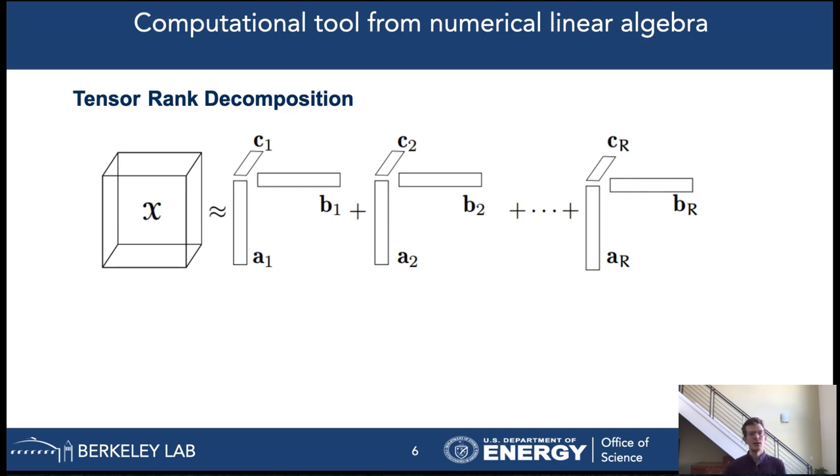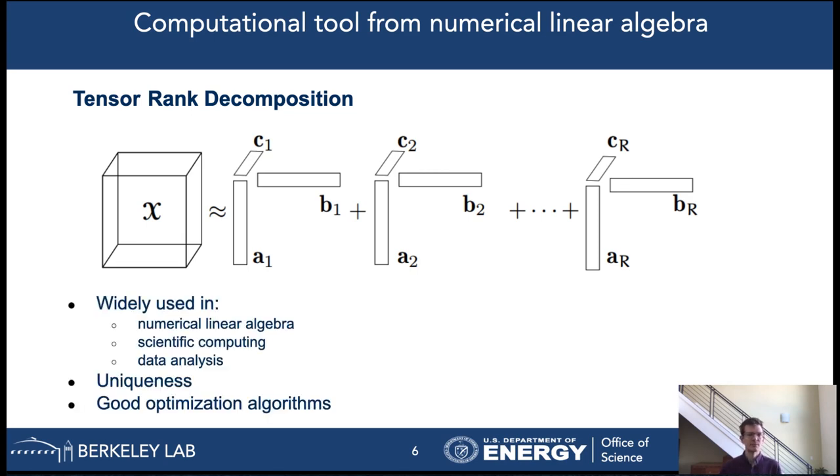The algebraic structure that we use is that of a tensor-rank decomposition, which is also known as a canonical polyadic decomposition. In this context, a tensor is a high-dimensional array. In the picture, we show a third-order tensor, which is a 3D array, that is approximated as a sum of R rank-1 tensors. Third-order rank-1 tensors are the outer product of three vectors. This type of decomposition has been widely used in applications in numerical linear algebra, scientific computing, and data analysis. One advantage that they have is that they are essentially unique under mild conditions. Another one is that good optimization algorithms have been proposed to compute the tensor-rank decomposition approximately. One of these algorithms is the alternating least squares method, although an exact solution to this problem is an NP-hard problem in general.